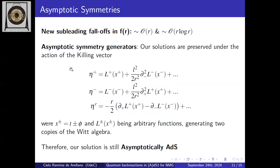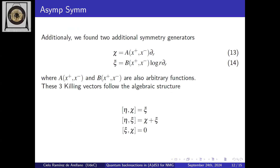These new sub-leading orders account for relaxed Brown-Henneaux asymptotic conditions. Looking for the asymptotic symmetry generators, we find the theory remains invariant under two copies of the Virasoro algebra, meaning it is still asymptotically AdS even though the falloffs are higher than order one. We find two additional symmetry generators: one associated with new massive gravity and one arising from the logarithmic backreaction.